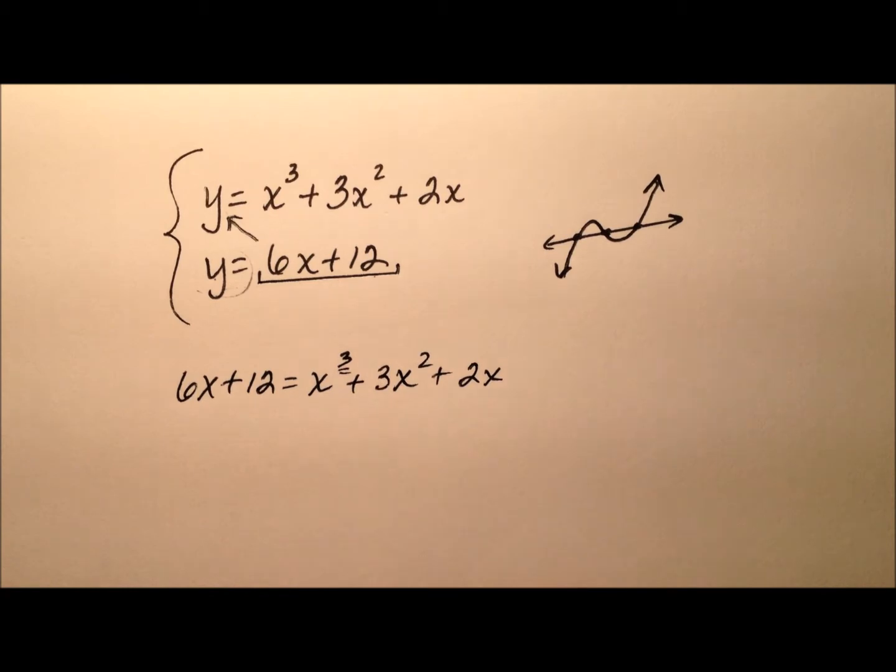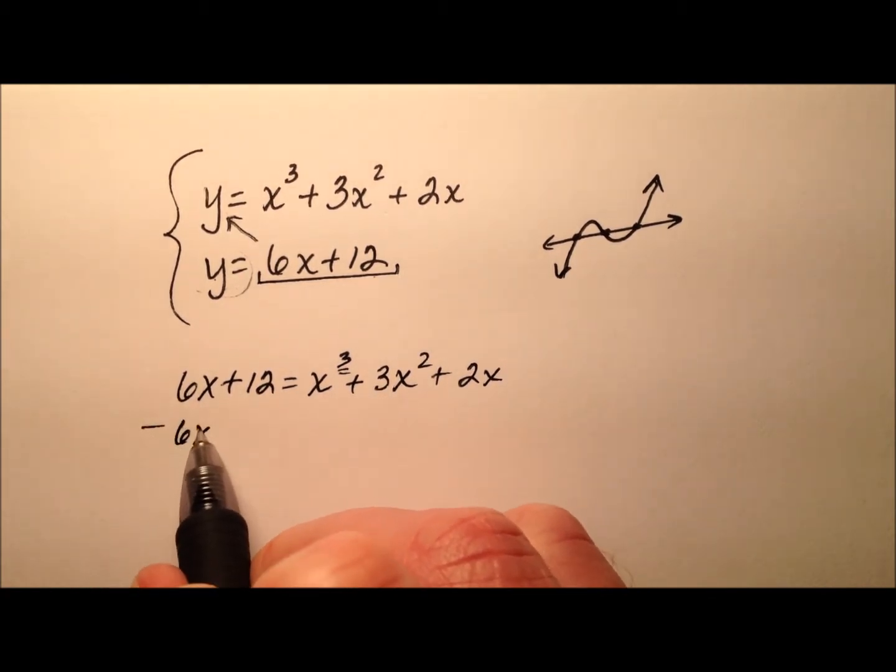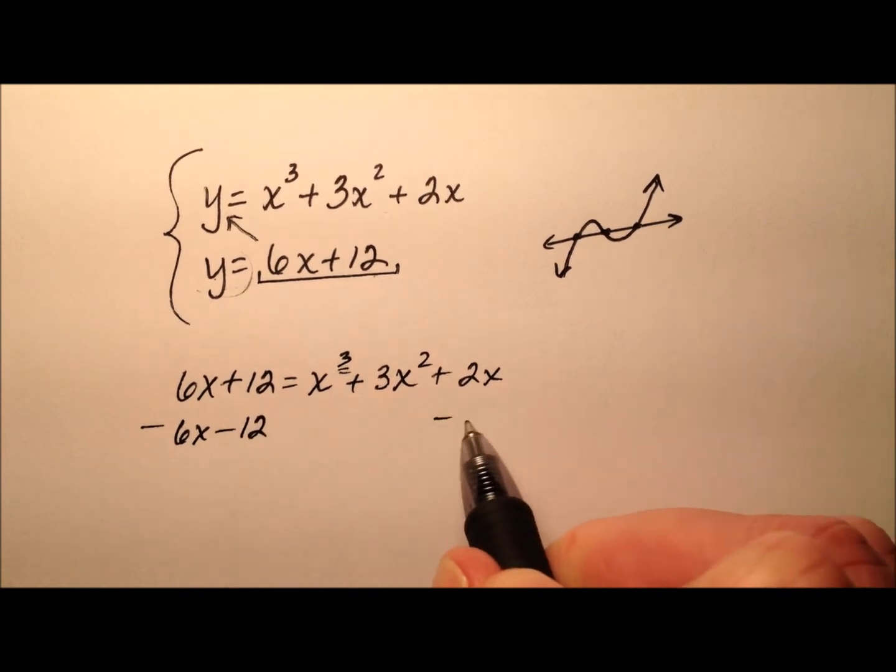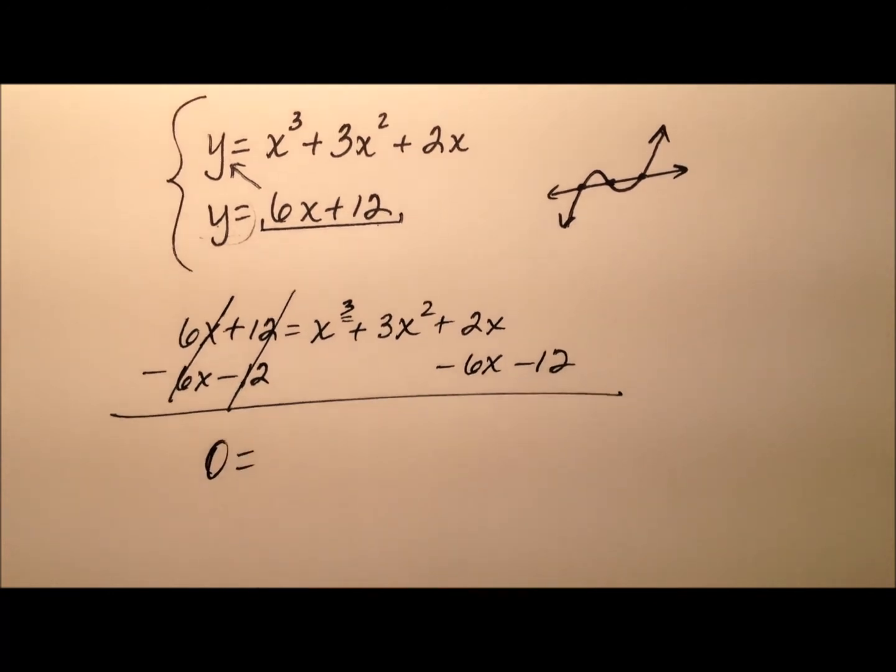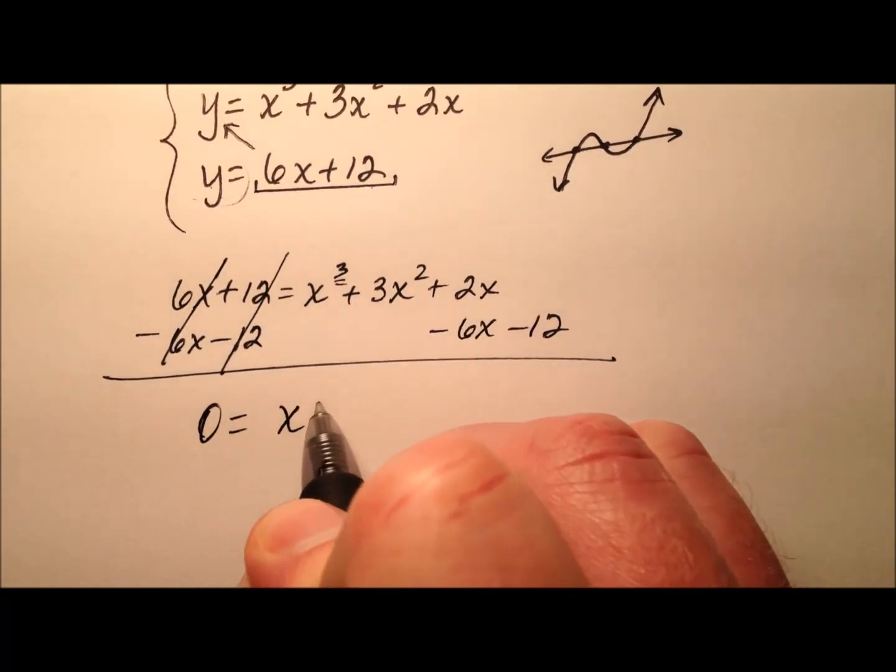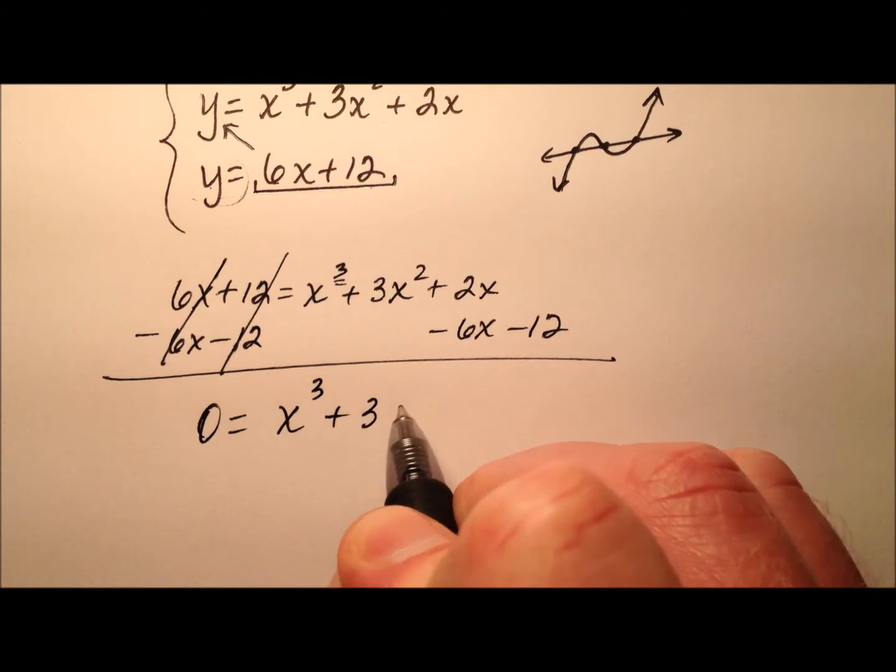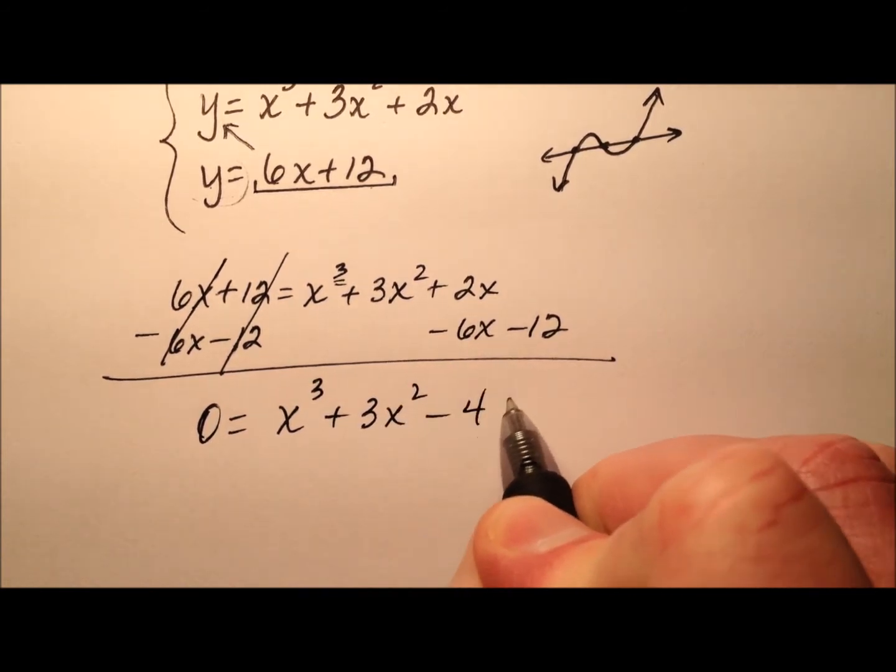Since we know it's a higher power polynomial, we're going to set it equal to zero and solve. So let's go ahead and subtract 6x and subtract 12 from both sides. So we have this zero now over here on the right side, and we'll have x cubed plus 3x squared minus 4x minus 12.